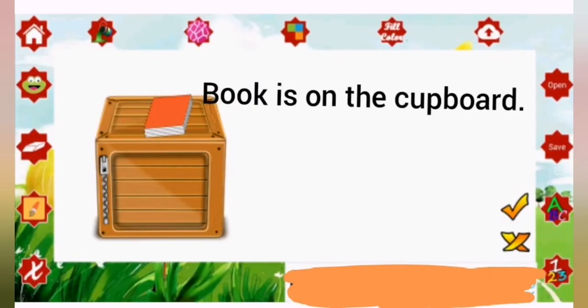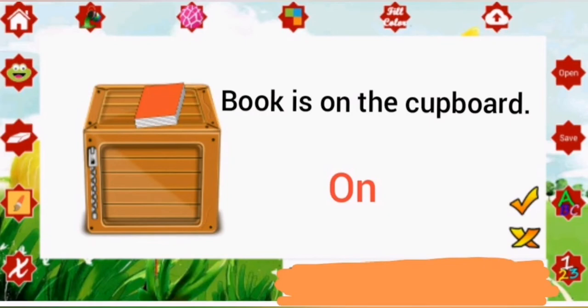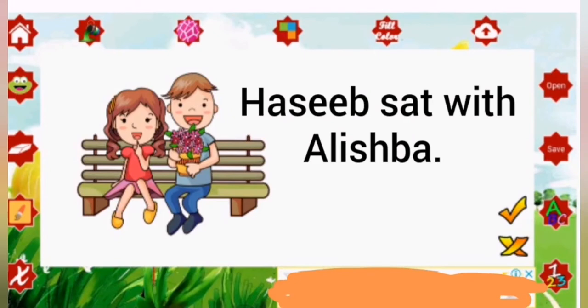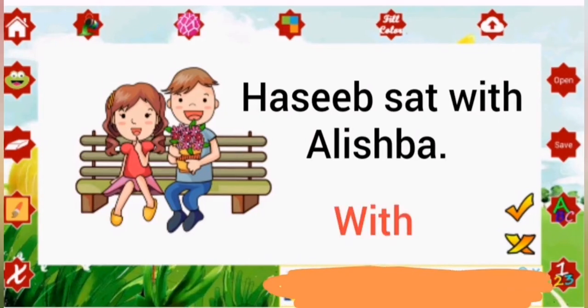Book is on the cupboard. Here, on is preposition. Hasib sat with Alishpa. In this example, with is preposition.